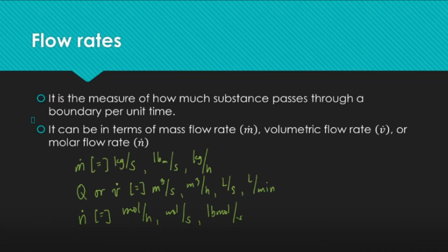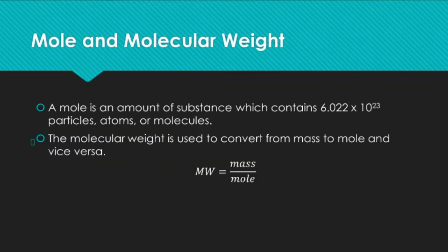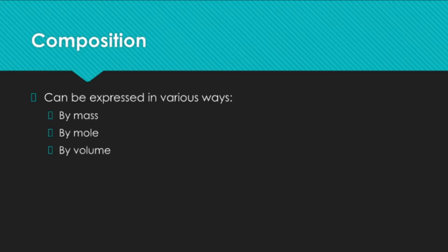It's important that when you are given a flow rate, you immediately recognize what type it is. Next, we have mole and molecular weight. The molecular weight is a parameter used to convert from mass to mole or vice versa, and also to convert between mass flow rate and molar flow rate. It also gives us flexibility to convert from a volumetric unit to a molar unit using both density and molecular weight. We define a mole as the amount of substance which contains 6.022 × 10²³ particles, atoms, or molecules. Composition can be expressed in terms of percent by mass, percent by mole, or percent by volume, and it's important to know how to convert between these forms.